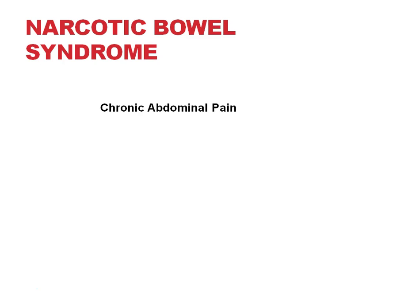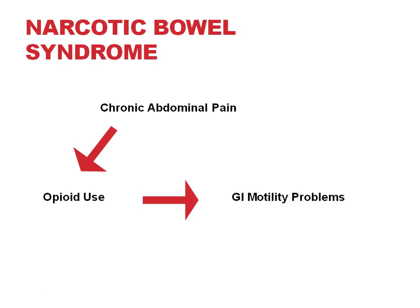One very specific situation is narcotic bowel syndrome, described in people with chronic abdominal pain. In these patients, other medications stop working and they start relying solely on opioids. Opioid use causes GI motility problems including constipation, nausea, vomiting, and even ileus, which worsen abdominal pain, leading to escalating opioid doses in a difficult cycle. In the ED, we can provide symptomatic treatment with prokinetic agents such as metoclopramide or erythromycin, avoid opioids that worsen the condition, and refer patients to addiction counseling when appropriate.